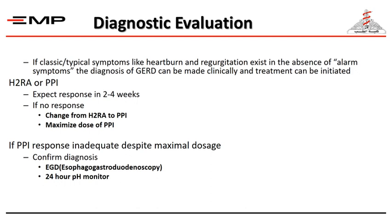For diagnostic evaluation: if the patient presents with typical symptoms — heartburn and regurgitation — without any alarm symptoms, the diagnosis of GERD can be made clinically and treatment started with H2 receptor antagonists or proton pump inhibitors, expecting a response in two to four weeks. If there is no response, we change to another type or maximize the PPI dose. If the response remains inadequate, we start investigation with upper GI endoscopy and 24-hour pH monitoring.